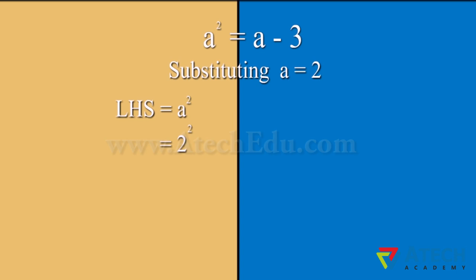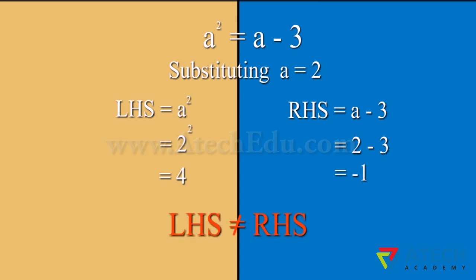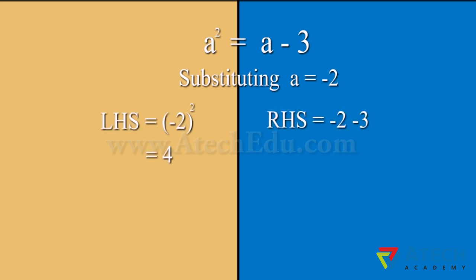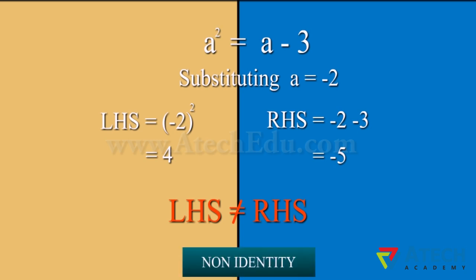Substituting value of A equals 2, we find that LHS equals 4 and RHS equals minus 1. Hence, LHS is not equal to RHS. Substituting value of A equals minus 2, we find that LHS equals 4 and RHS equals minus 5. Hence, LHS is not equal to RHS. Hence, this equation is not an identity.